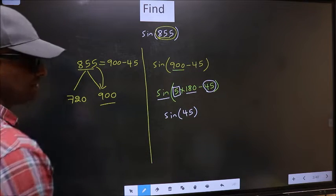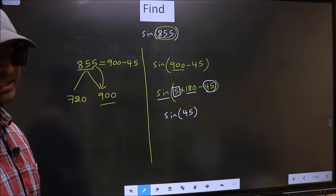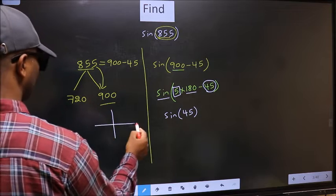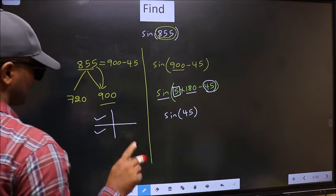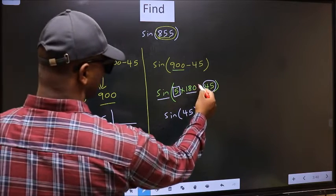And 5 is odd. All the odd multiples of 180 lie either in the second or in the third quadrant. So, now to select the quadrant, we should look at this symbol.